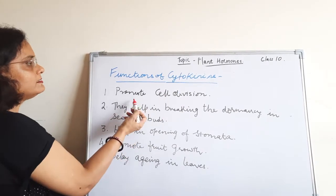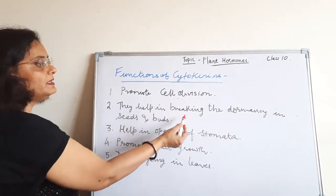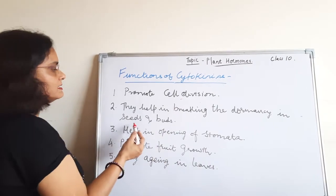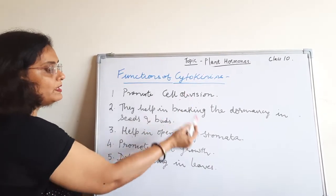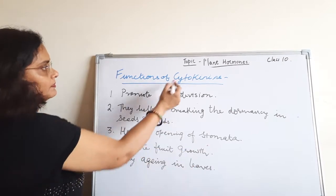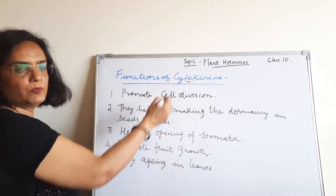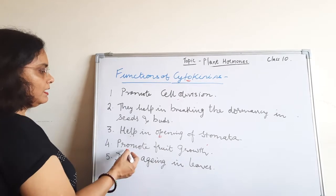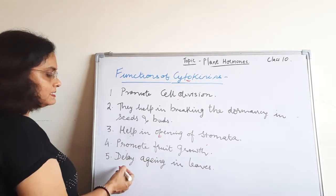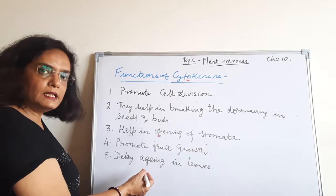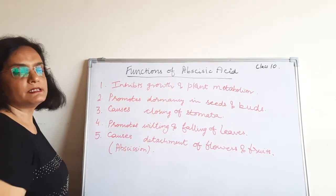The functions of cytokinins are: cytokinins promote cell division and help in breaking the dormancy of seeds and buds. They help in the opening of stomata, promote fruit growth, and delay aging in leaves.